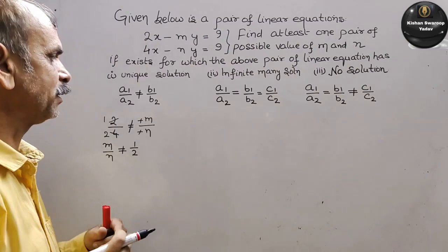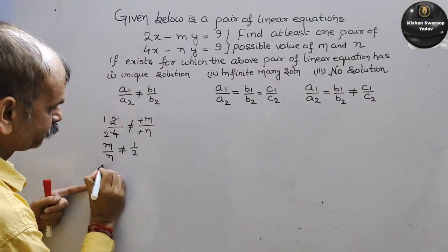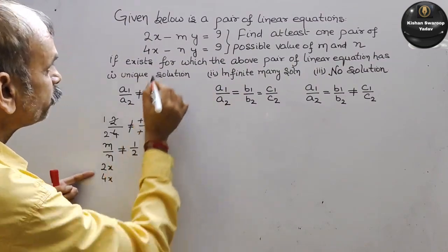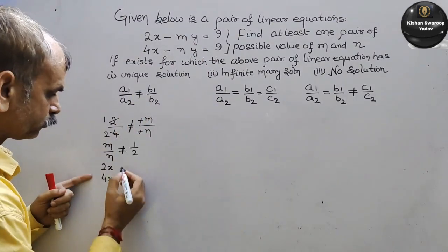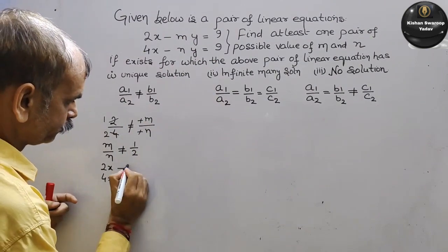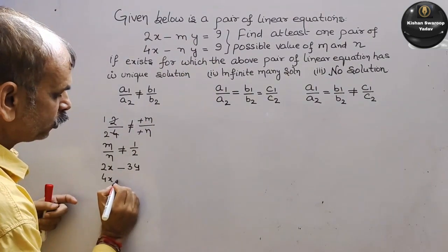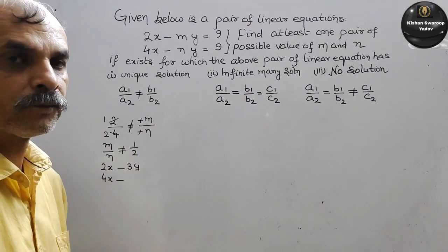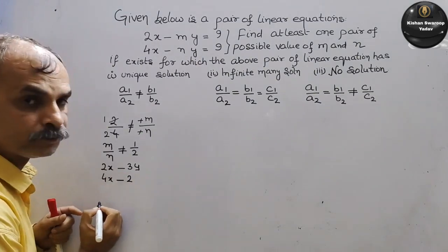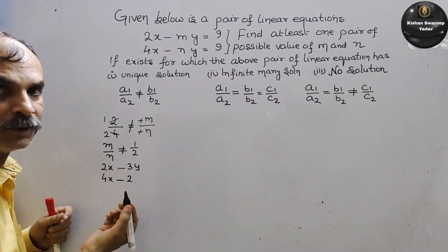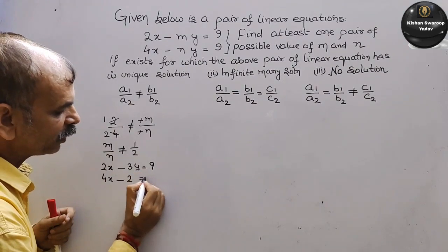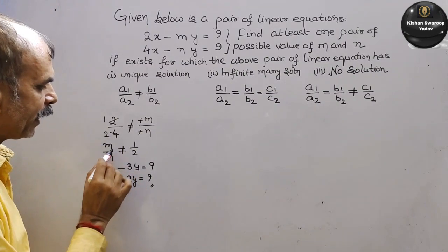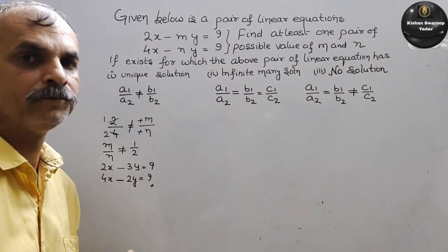तो आप सिर्फ 1 by 2 को छोड़के बाकी कोई भी value इसमें put कर सकते हैं। यहाँ पर है 2x और यहाँ पर है 4x — दोनों का ratio 1 by 2 है। तो next जो भी आप लिखोगे वो 1 by 2 नहीं होना चाहिए। Suppose यहाँ पर हमने लिखा minus 3y, तो यहाँ पर 6 को छोड़के बाकी आप कुछ भी लिखो। Suppose हमने यहाँ पर लिख दिया 2, तो 3 by 2 हो गया और यह 1 by 2 — equal to 9. So m by n is not equal to 1 by 2, बाकी कुछ भी हो सकता है।